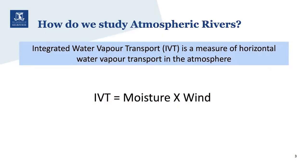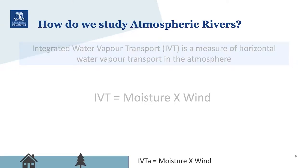We measure atmospheric rivers using a variable called the Integrated Water Vapour Transport, or IVT, which is a measure of horizontal water vapour transport in the atmosphere. IVT is basically the product of moisture concentration and wind, which we observe from satellite observations, weather balloons, aeroplanes, and models.